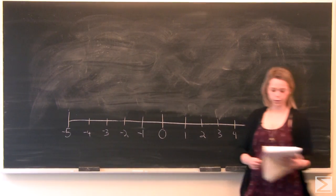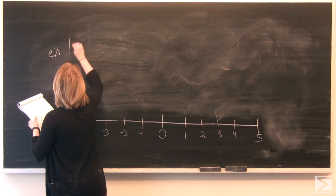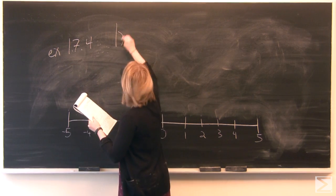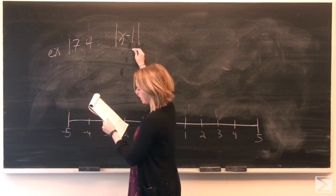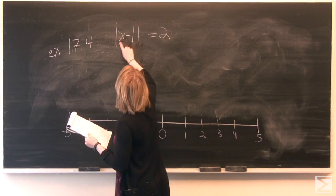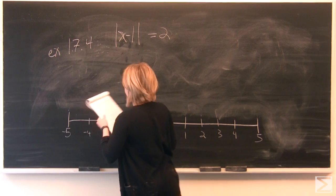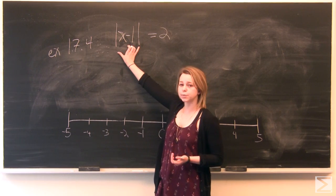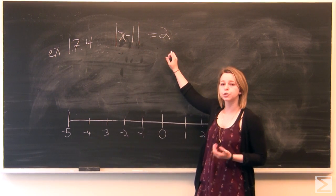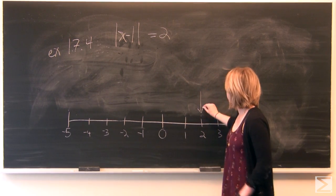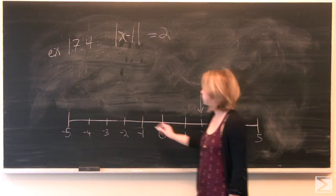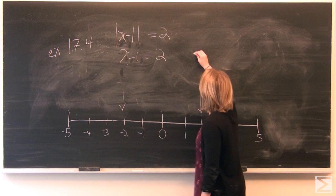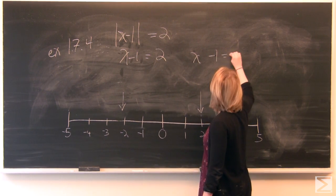Our first problem is example 1.7.4 from our precalculus book. The equation states the absolute value of x minus 1 is equal to 2. We can interpret this as looking for where the expression x minus 1 is exactly 2 units away from 0. That means x minus 1 equals positive 2, or x minus 1 equals negative 2.